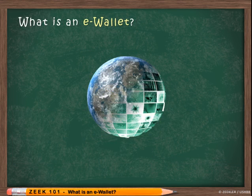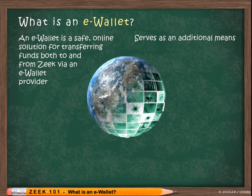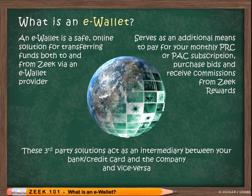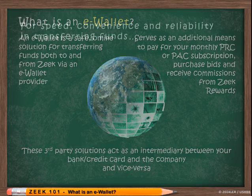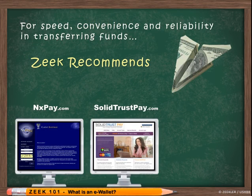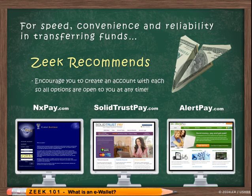An eWallet is a safe online solution for transferring funds both to and from Zeek via an eWallet provider. An eWallet serves as an additional means — other than credit cards and mailing checks — to pay for your monthly PRC or PAC subscription, to purchase bids, and to receive your commissions from Zeek Rewards. These third-party solutions act as an intermediary between your bank or credit card and the company. For speed, convenience, and reliability, Zeek recommends NXPay, SolidTrustPay, and AlertPay. Links to these providers are in your back office, and we encourage each affiliate to create an account with each company so all options are open to you at any time.